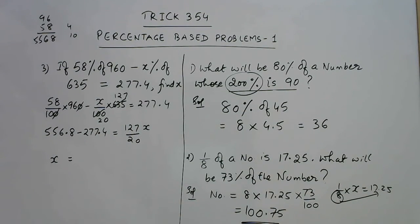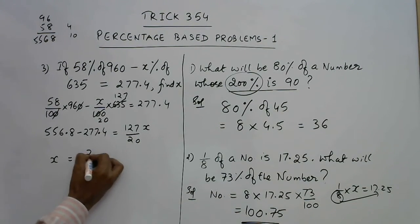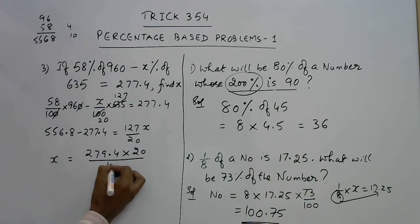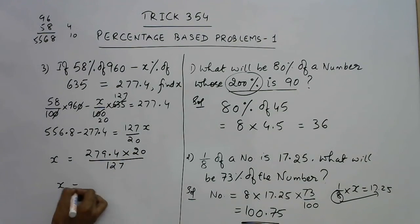In these type of questions you need to know basic calculation skills and basic calculation methods. Obviously when you are not aware of such methods, these calculations are very lengthy for you. So the difference here is 279.4, which you have to multiply by 20 and divide by 127. And you can check your answer: if you strike this off you get exact 44 as the answer.